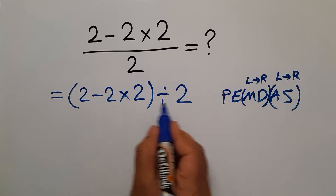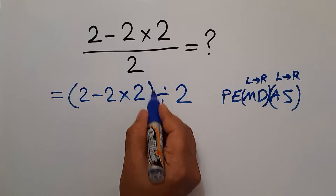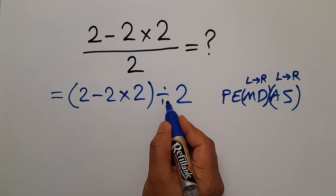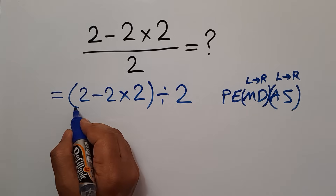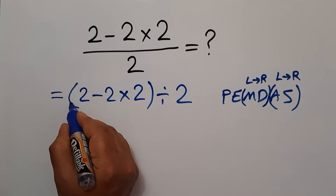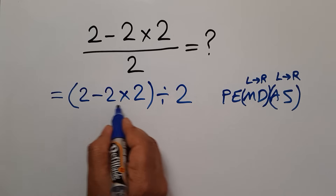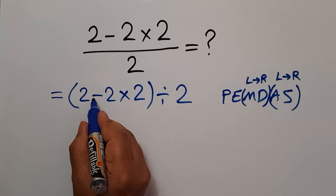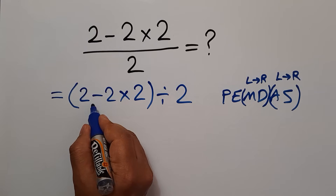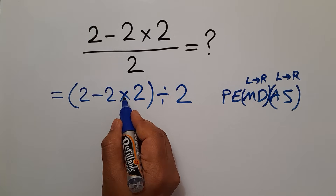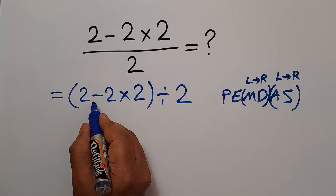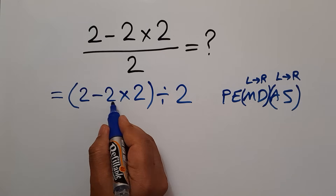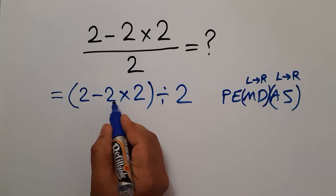In this expression, we have these parentheses and this division. According to PEMDAS, first we have to handle these parentheses. And inside these parentheses, we have this subtraction and this multiplication. Multiplication has higher priority than subtraction, so first we compute 2 times 2, which equals 4.